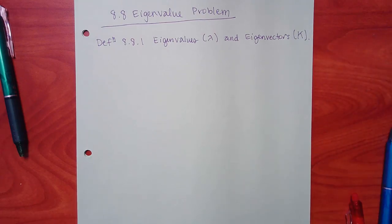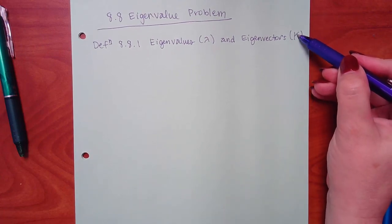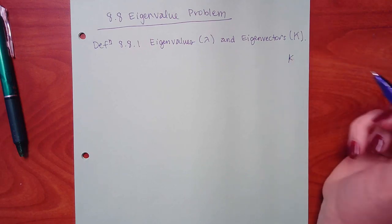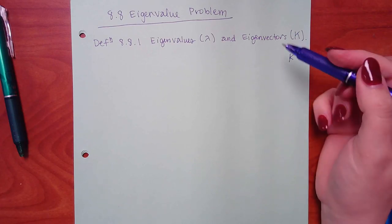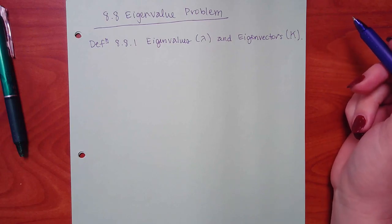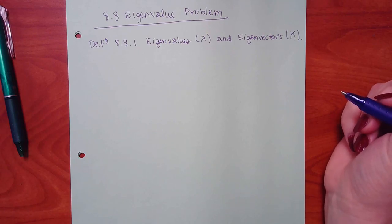I'm not a book, so I don't write things in bold print. To distinguish the two, I will be using capital Ks and little Ks. Now, those could look a lot alike. Notice the way that I write my capital K — this little leg is sticking out of the other leg. My little Ks have them both sticking out of the stem. So that's literally going to be your cue between whether I'm talking about a vector or just a little entry in the matrix.